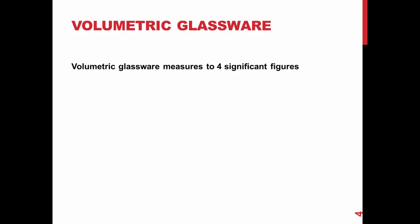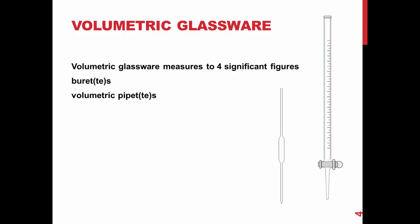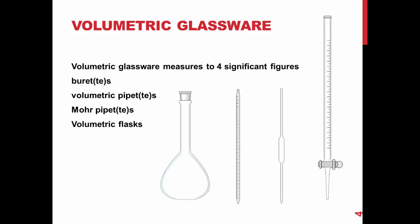During titrations, you will be mainly using volumetric glassware. All volumetric glassware measures to four significant figures. Examples of volumetric glassware are burettes, volumetric pipettes, more pipettes, and volumetric flasks.